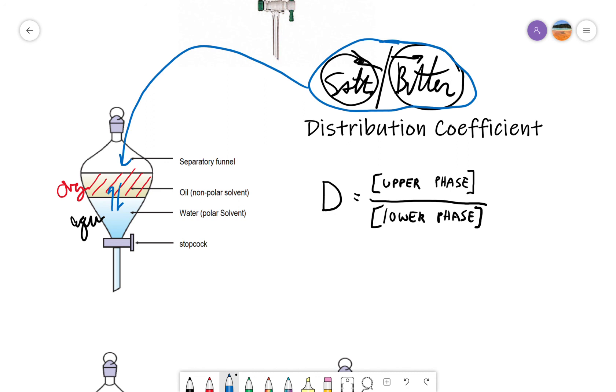If we're talking about our example with salt and butter, the salt will be more soluble in the aqueous phase, so it would be a small number over a big number, because it's more soluble in the lower phase, which would give us a very small distribution coefficient.